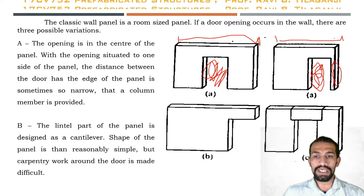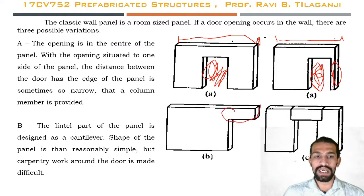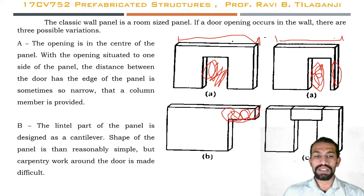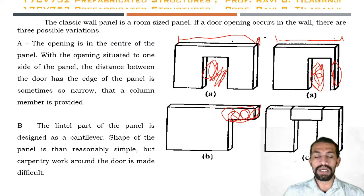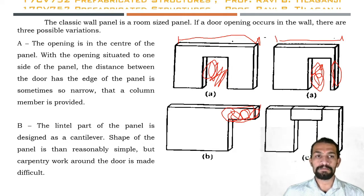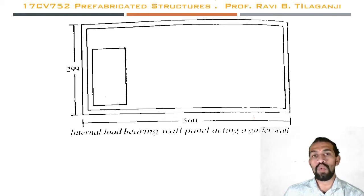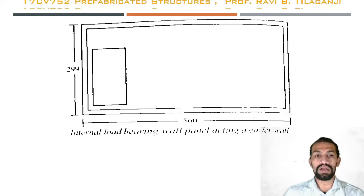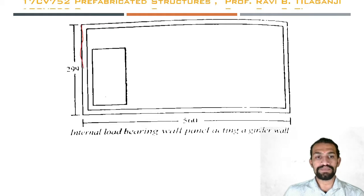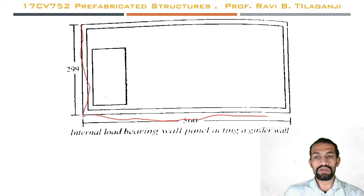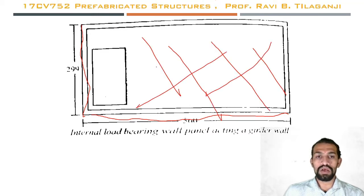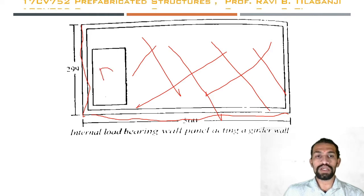The lintel part of the panel is designed as a cantilever. The shape of the panel is then reasonably simple but carpentry work around the door is more difficult. This is one of the internal load bearing wall panels acting as a girder wall, showing the total height, total room-size width, the fully reinforced wall, and the provision for the door opening.